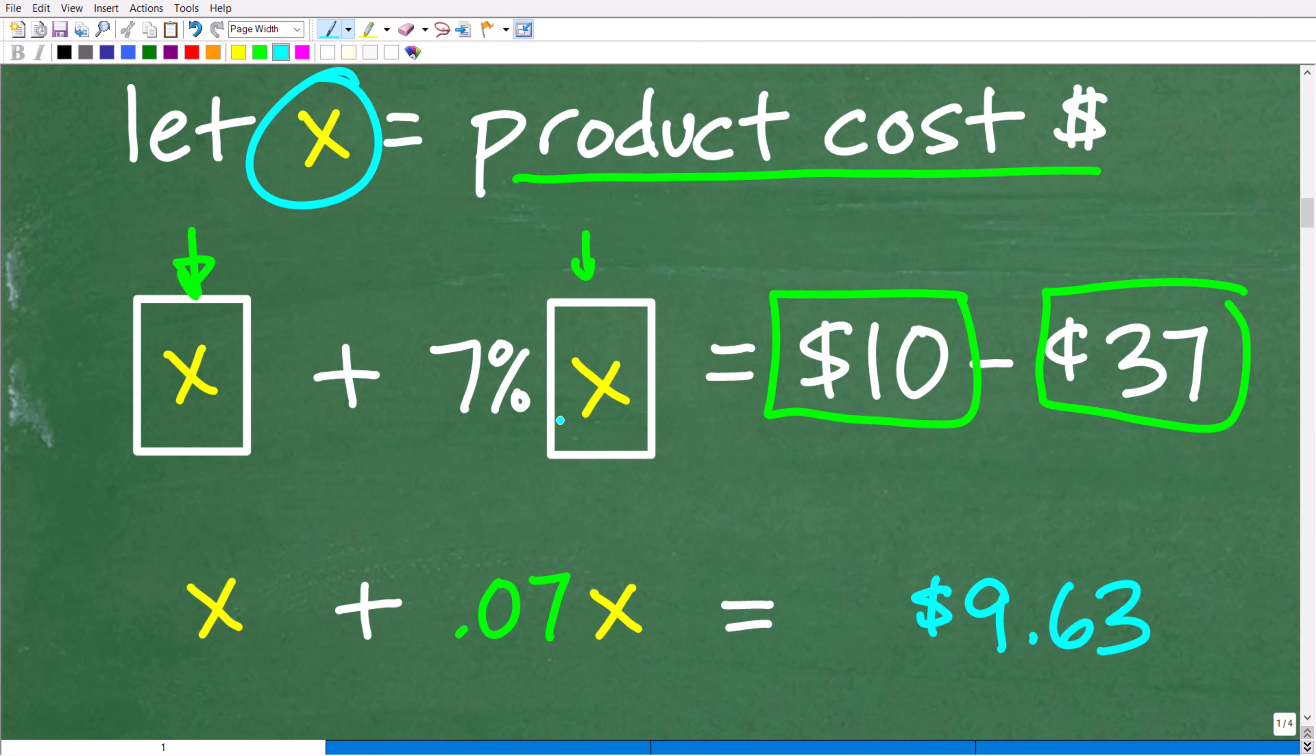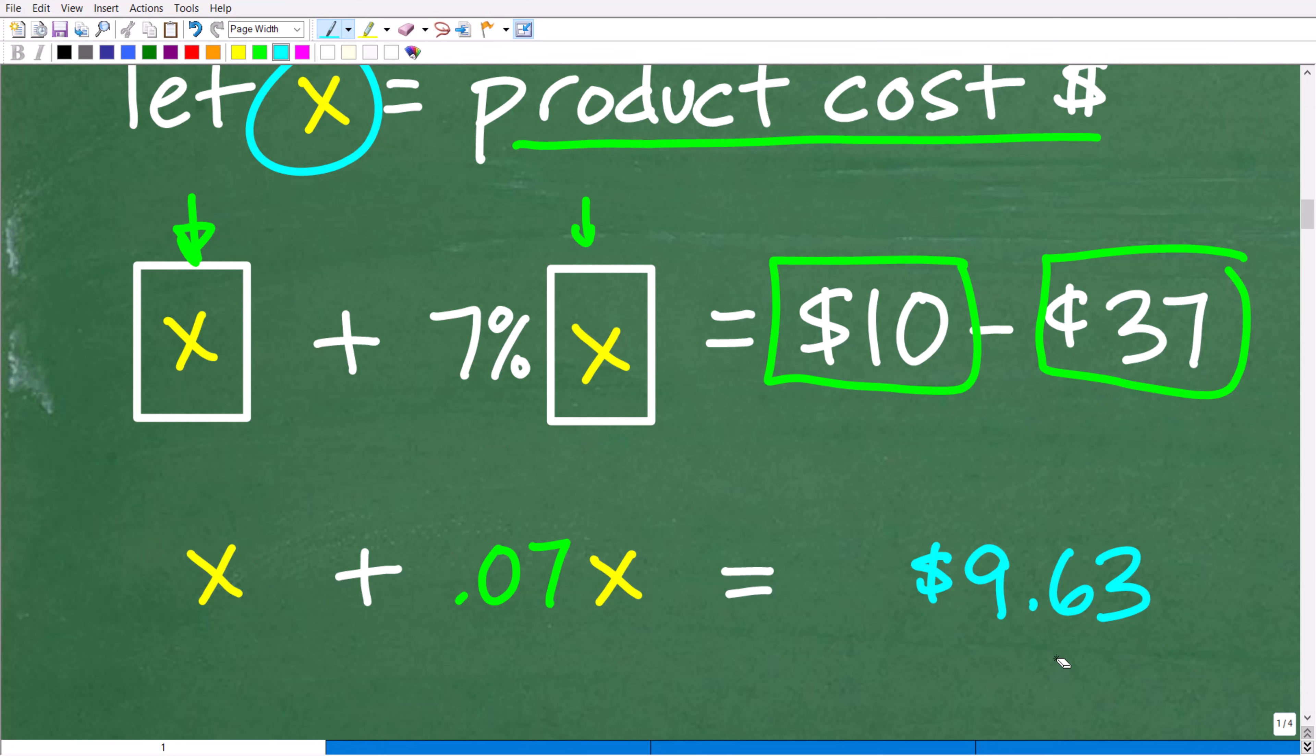Right? The product plus the tax is equal to $9.63. So let's use some algebra here to actually build this equation.